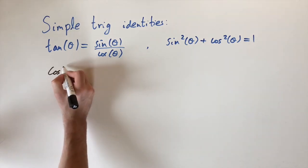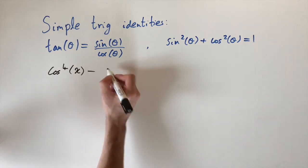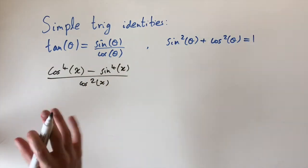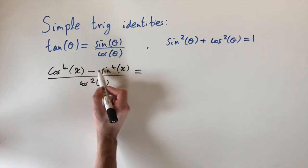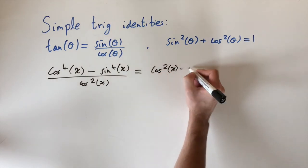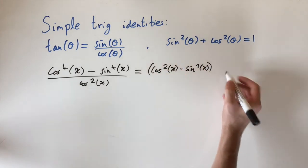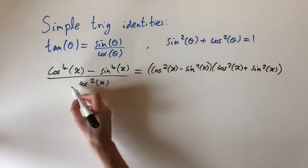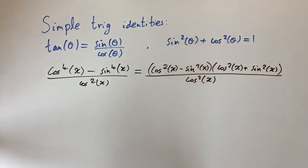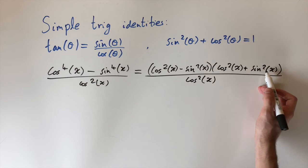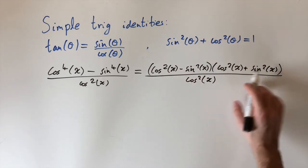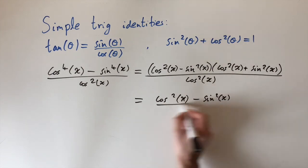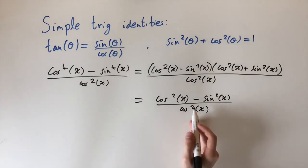The third and hardest example is (cos⁴x − sin⁴x) / cos²x. We notice the numerator is a difference of two squares, so we factor it as (cos²x − sin²x)(cos²x + sin²x), all divided by cos²x. The second bracket, cos²x + sin²x, is exactly our Pythagorean identity and equals one, so we can remove it, leaving (cos²x − sin²x) / cos²x.